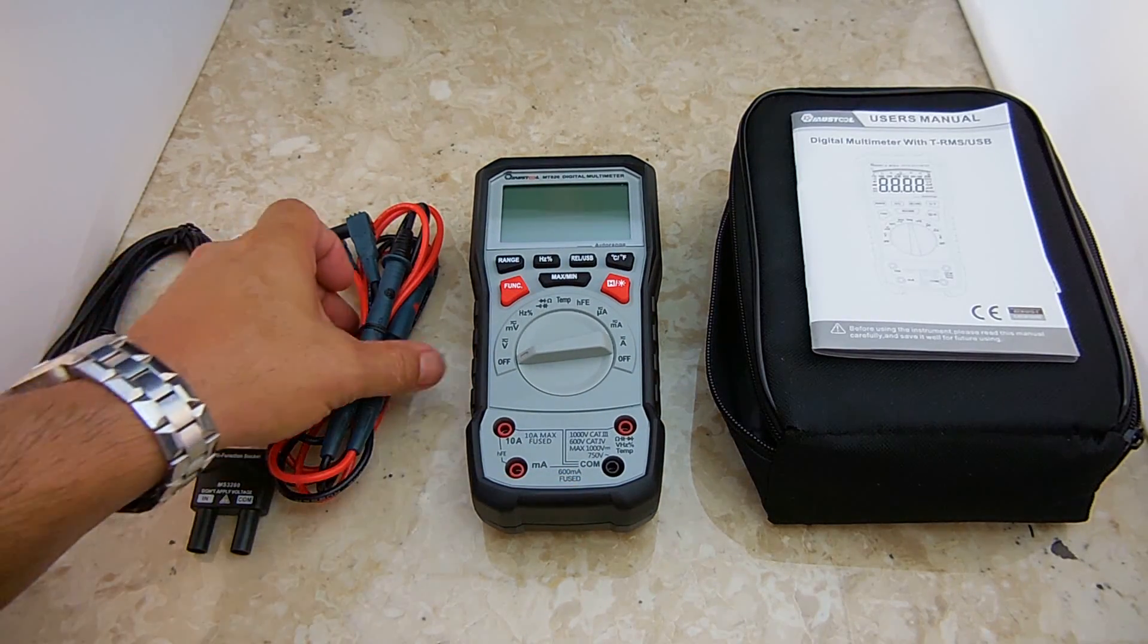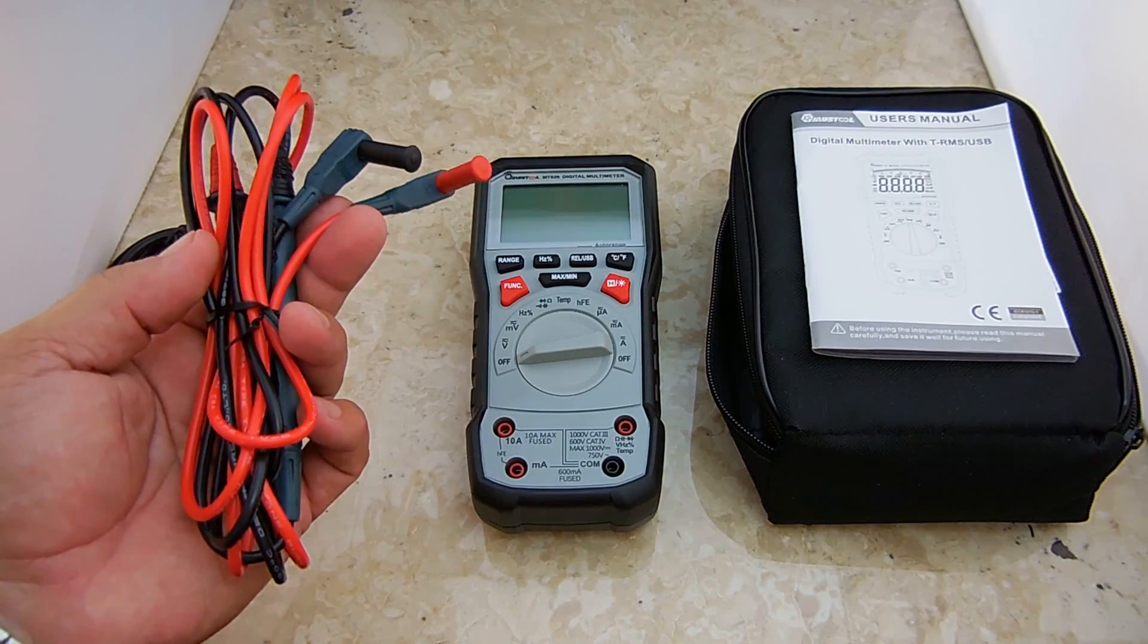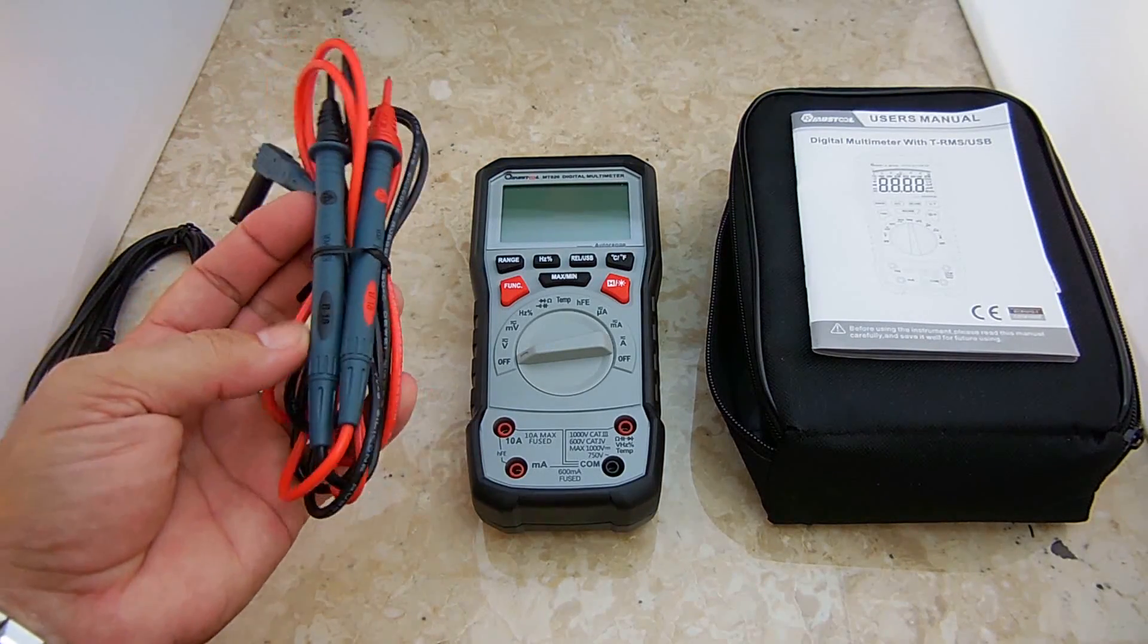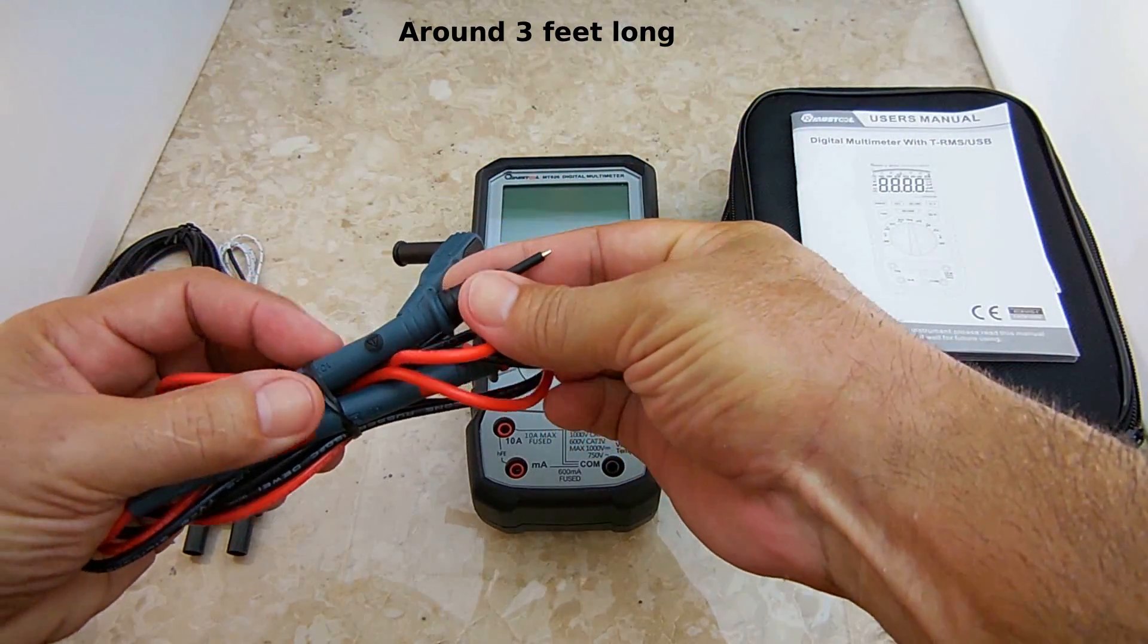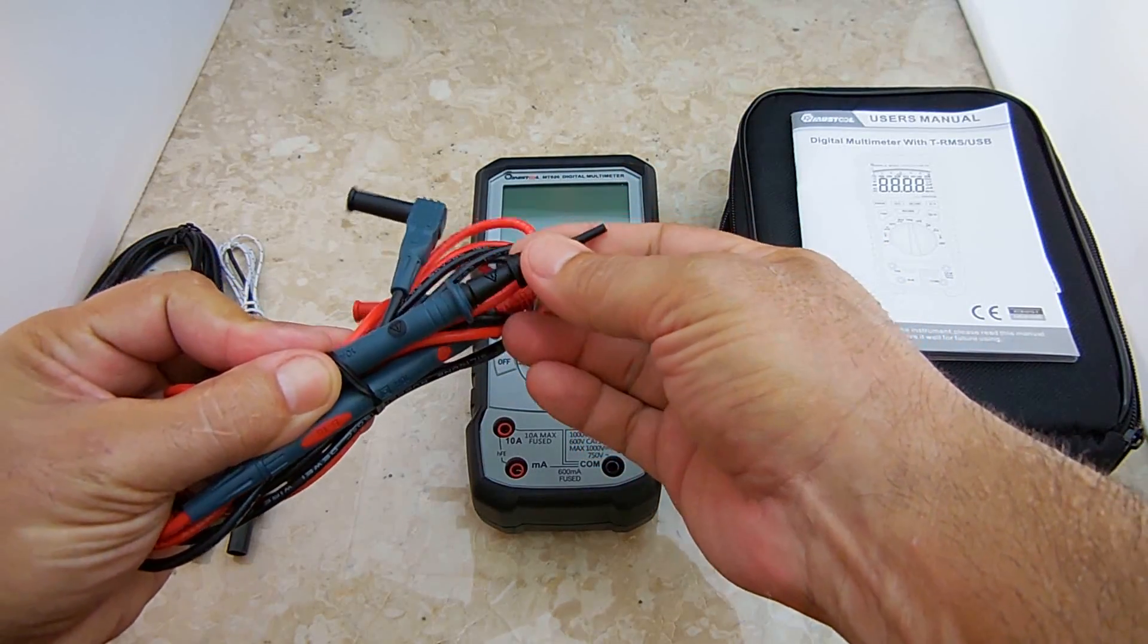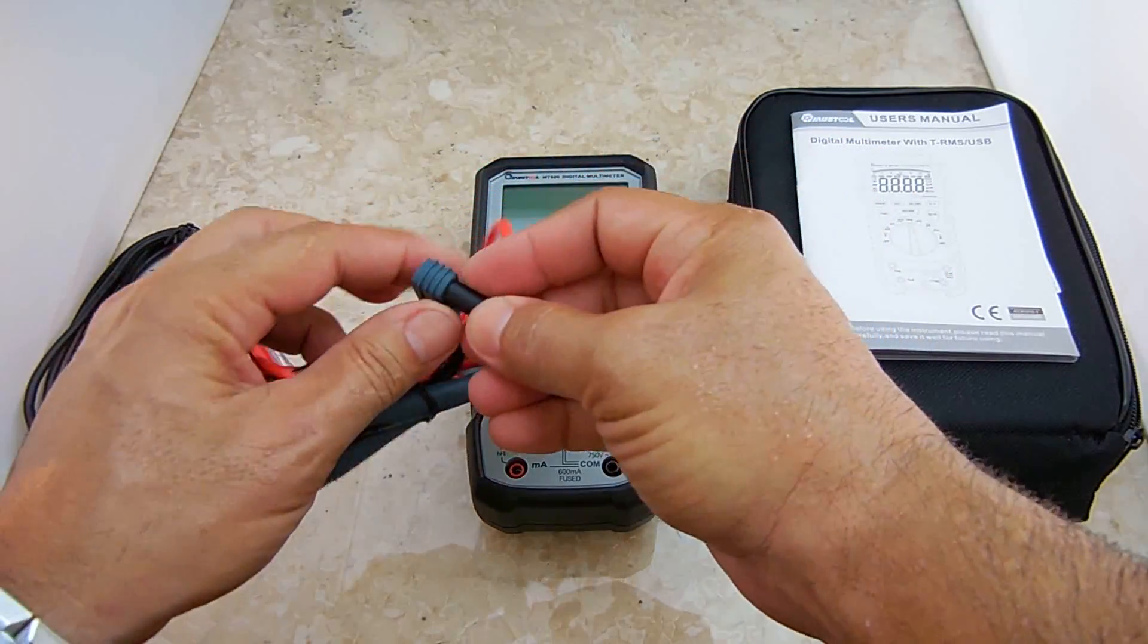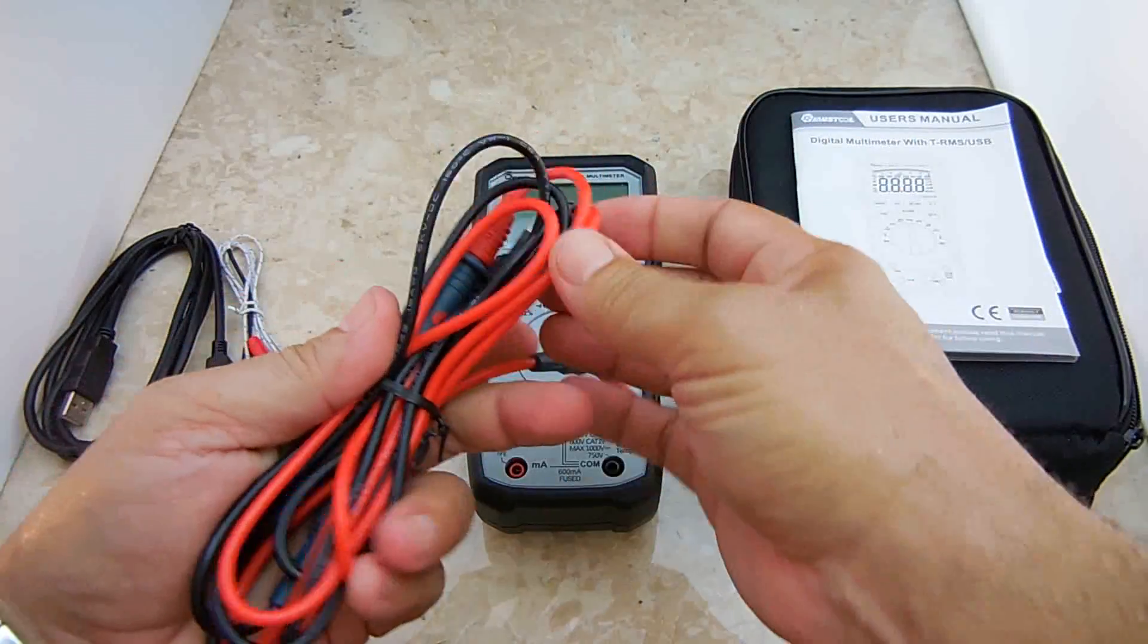Included are very long silicone test leads. You really don't find silicone test leads with inexpensive meters, but with this particular meter, you do get these very nice silicone test leads. The ends pop off so you could use that, or if you want to use this way, you'll be safer not to short something out. It has these caps right here. Very nice wire.